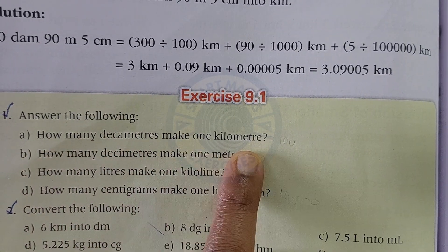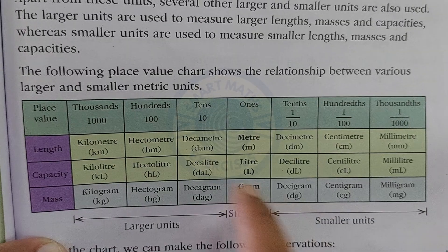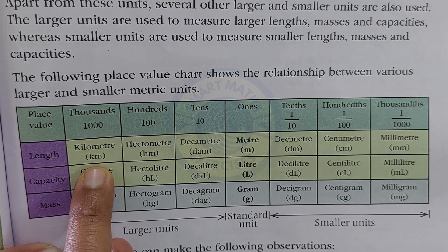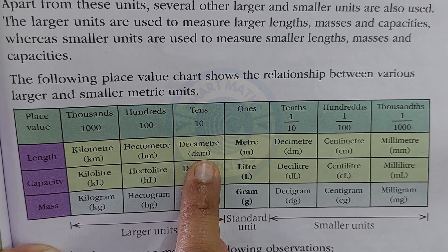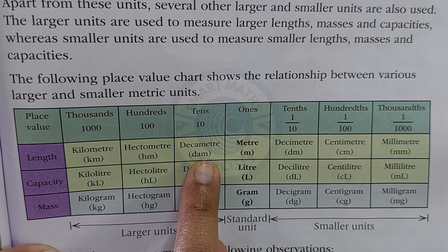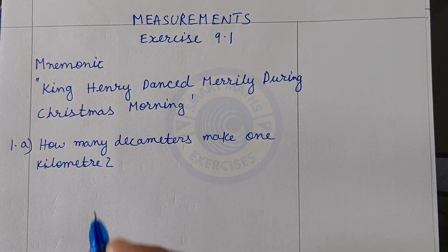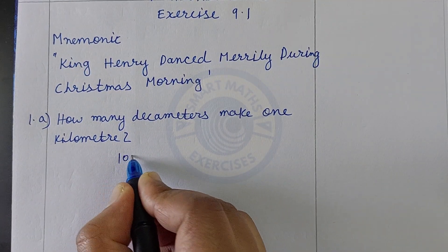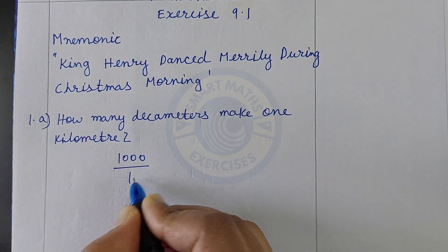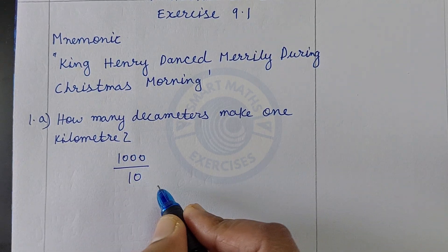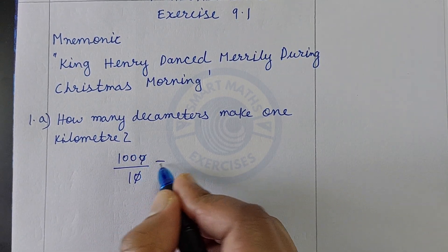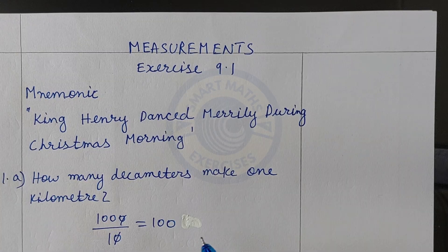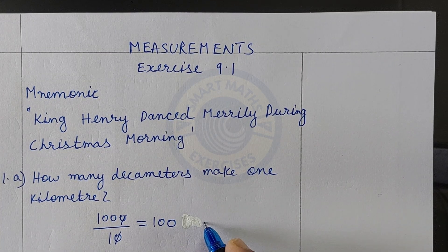How many decameters make 1 kilometer? From the table we know that 1 kilometer equals 1000 meters and 1 decameter equals 10 meters. So 1000 divided by 10 equals 100. The answer is 100 decameters.